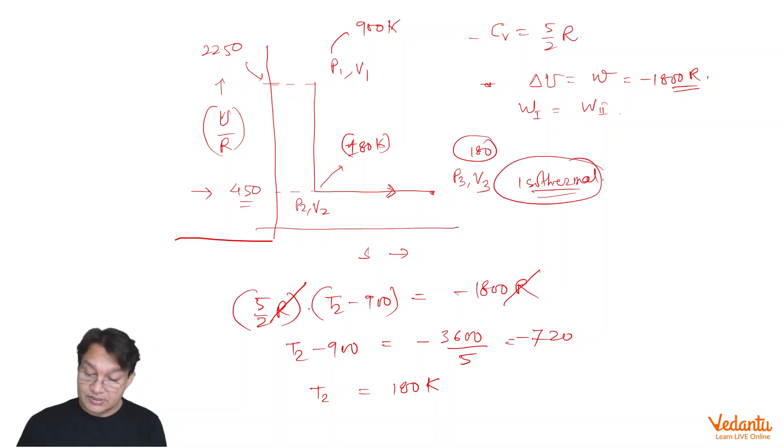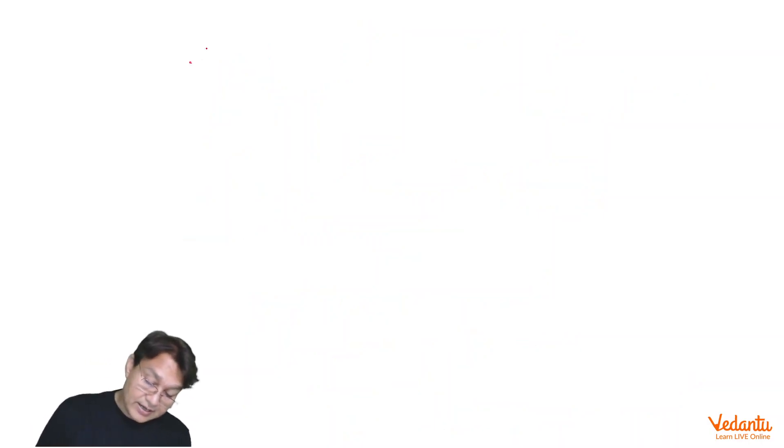In an isothermal process, the work done is given by W equals minus RT, since one mole of gas is involved, Ln V2 by V1. This is equal to, however, minus 1800 R. 1 R is cancelled. T in this case is equal to already calculated 180. From this, we are going to get Ln V2 by V1 equals 1800 upon 180, which equals 10.